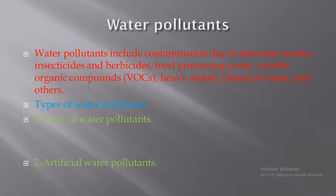The second type is the artificial water pollutants, which we are going to talk about in detail today. They arise from different human activities and are classified into four types: first is biological pollution, second is chemical pollution, third is thermal pollution, and finally radiant pollution.